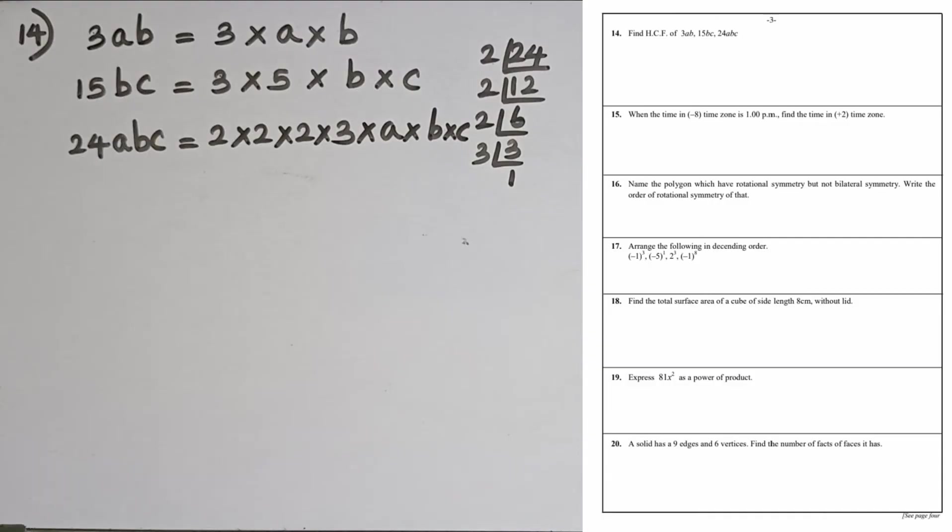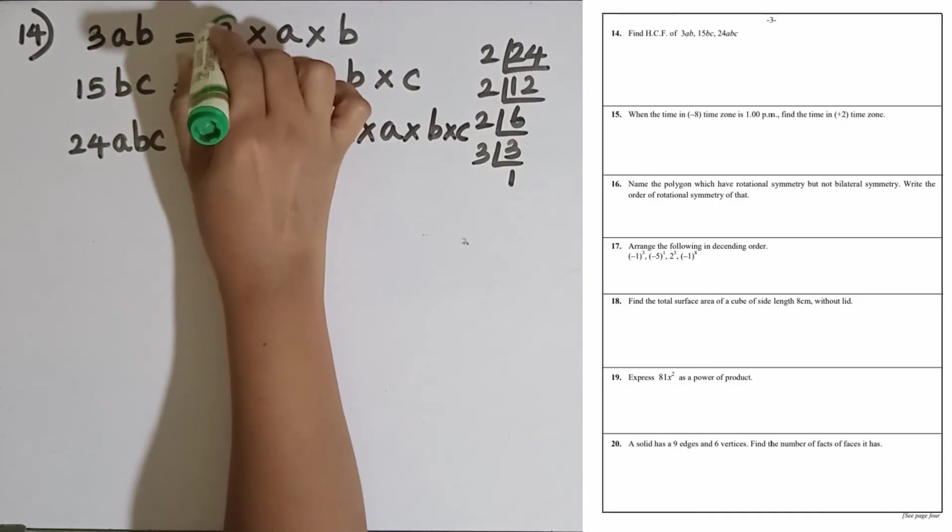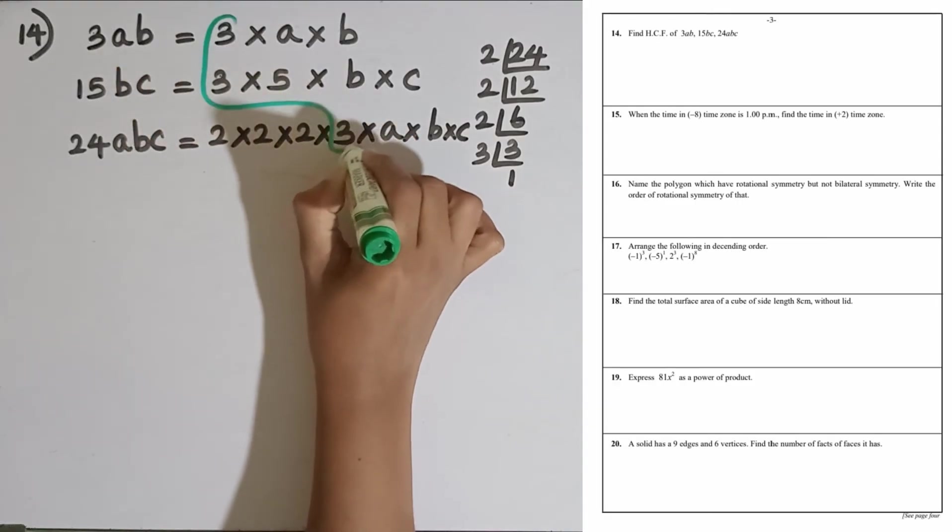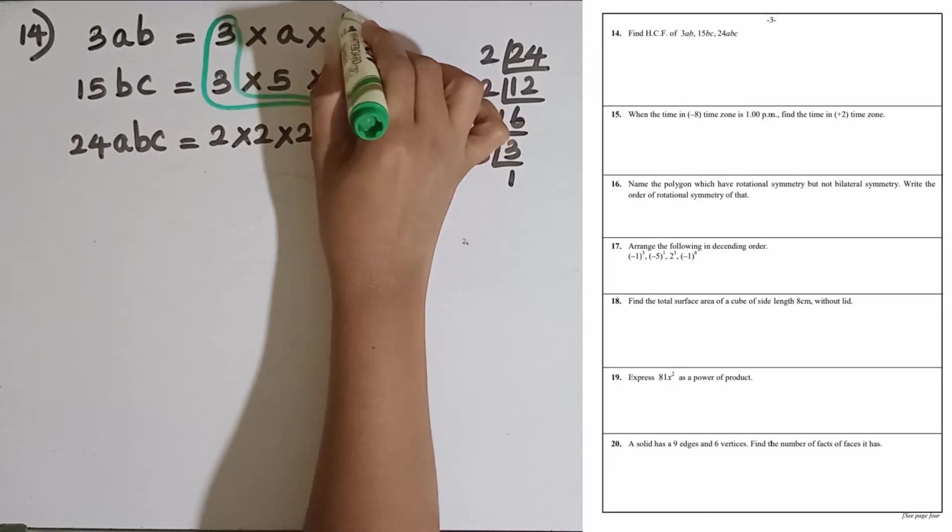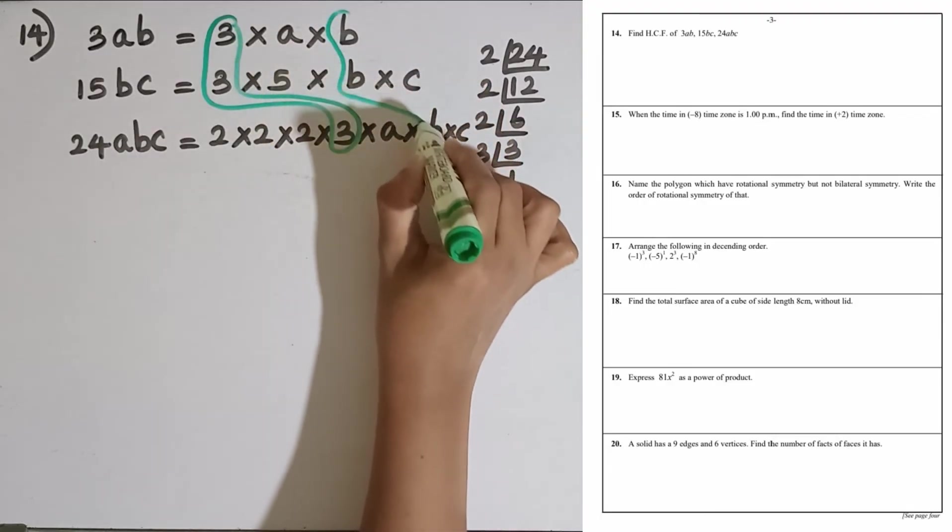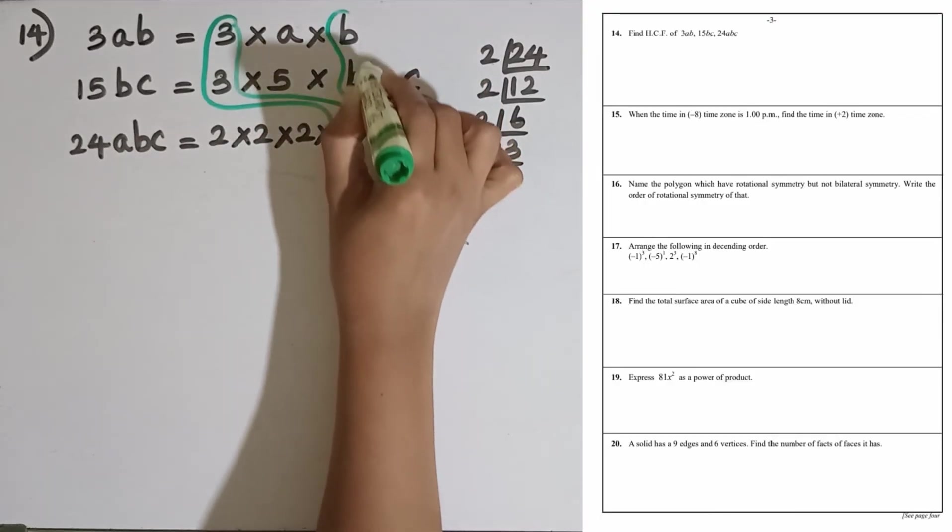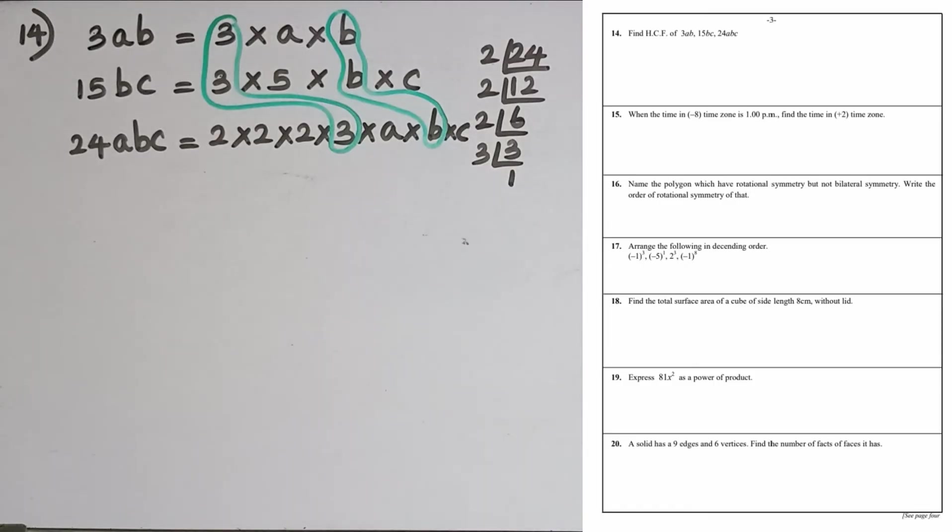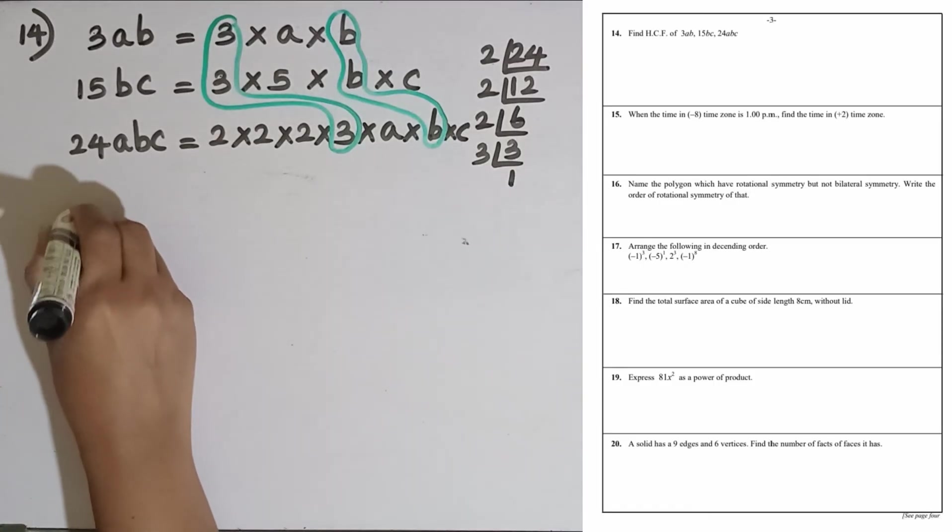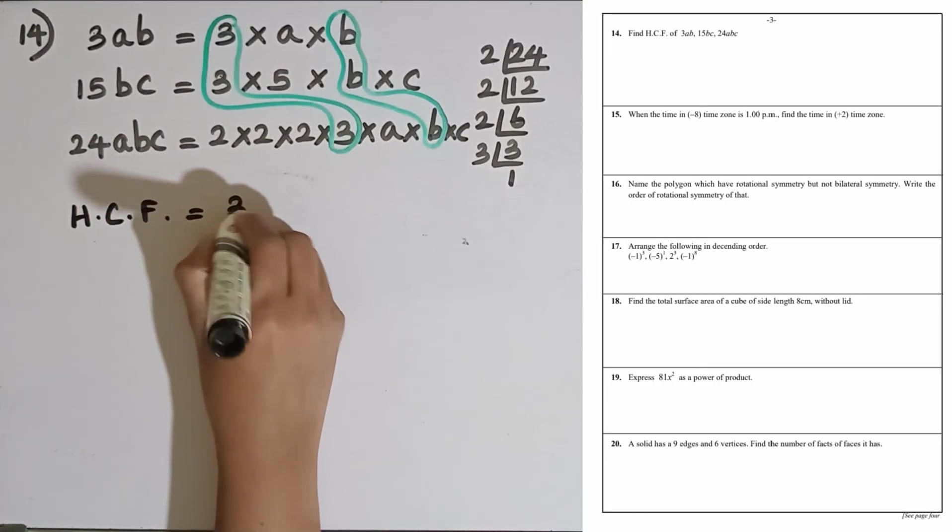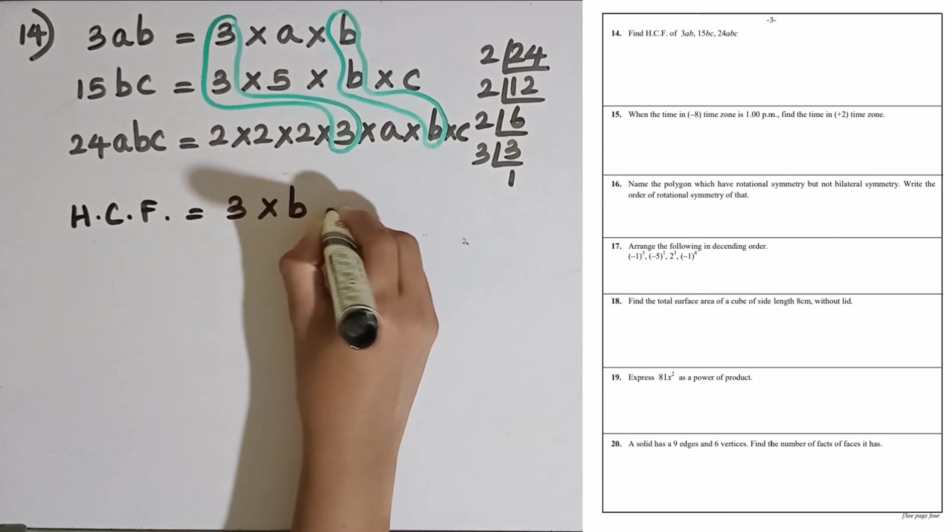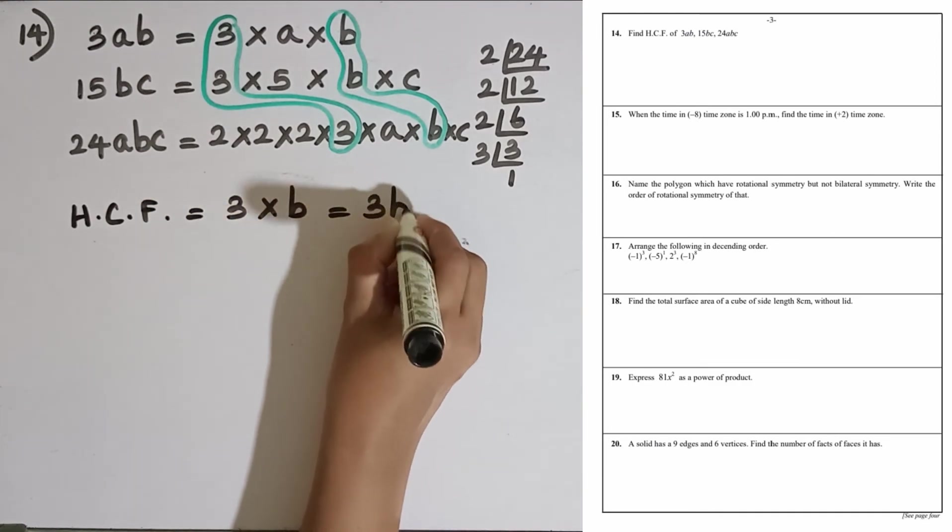Then we can circle the common factors here. 3 can be taken, then also b can be taken. No other common factors. So HCF of the 3 terms is equal to multiplication of 3 and b. 3b is the HCF here.